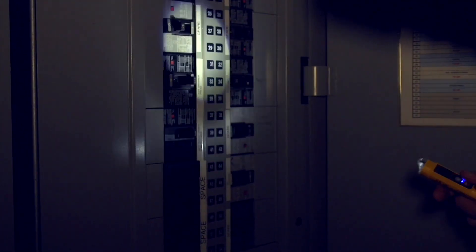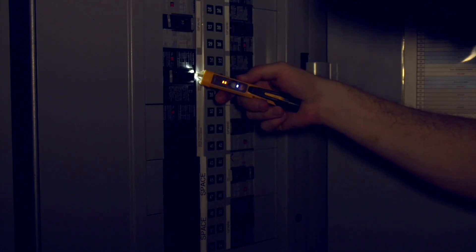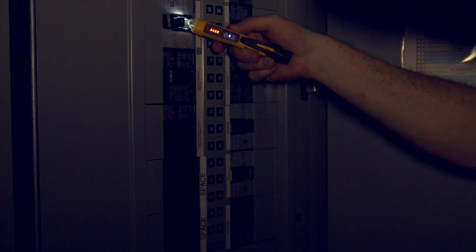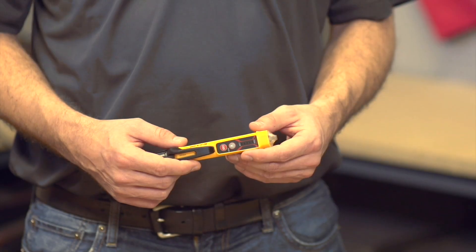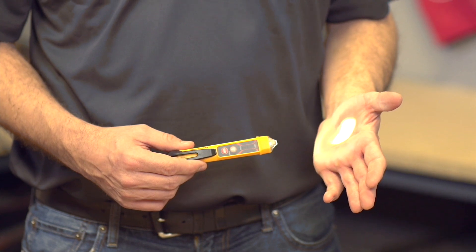When sensing voltage in dark cabinets, panels, or rooms, a flashlight is normally required in addition to a non-contact voltage tester. There are non-contact voltage testers on the market, like this one, that come with a flashlight for this reason.